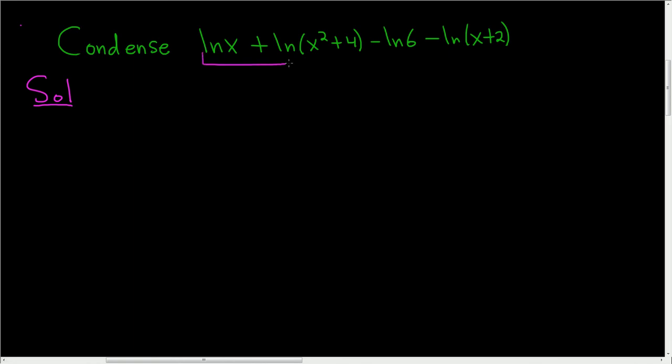So for these two logarithms here, we'll use the product rule. This is the natural log of x times x squared plus 4. So that takes care of this one and this one.